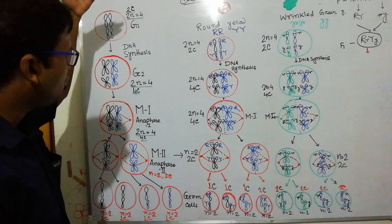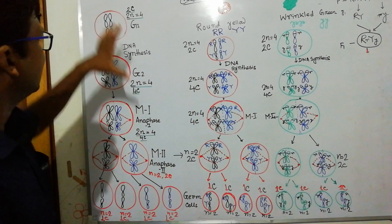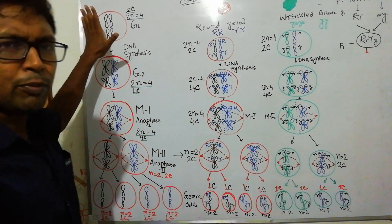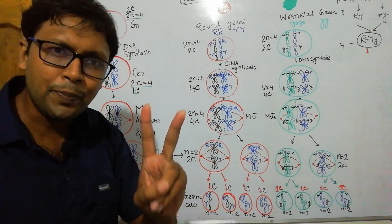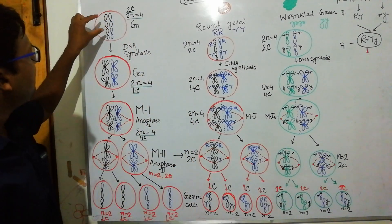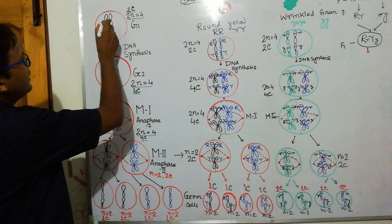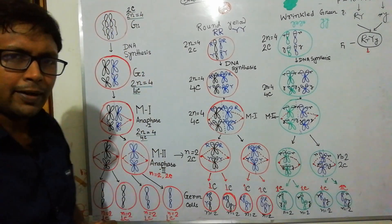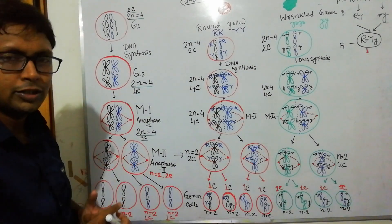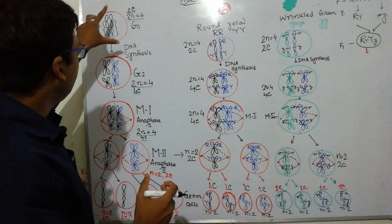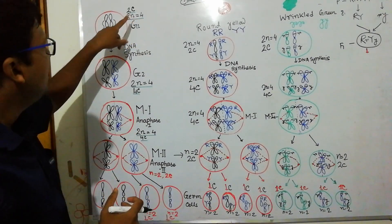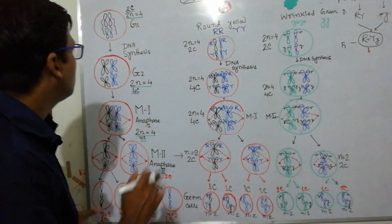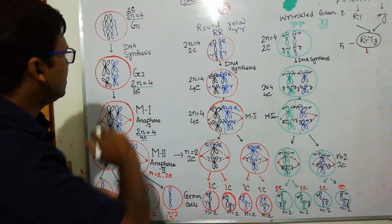Let's start the chromosomal theory of inheritance. First I have discussed the common meiotic process — what meiosis actually is. The first body cell is diploid and here two sets of chromosomes are present: two pairs, where one pair is from one parent and another pair is from the other parent. These are homologous chromosome pairs. The diploid cell has 2n = 4, meaning four chromosomes, with 2c DNA content.